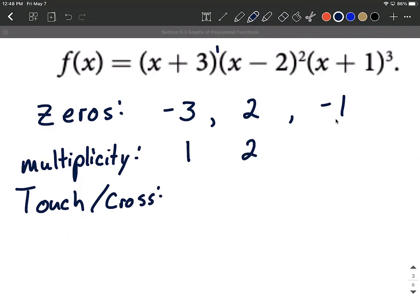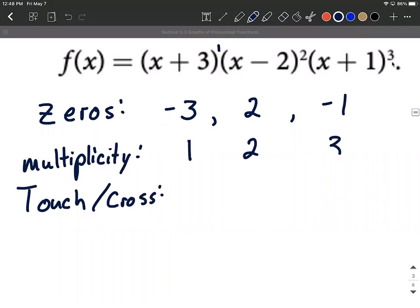And the last zero, the negative 1 came from this factor. Well, its multiplicity is going to be 3. Okay, next up, tell them whether these touch or cross.